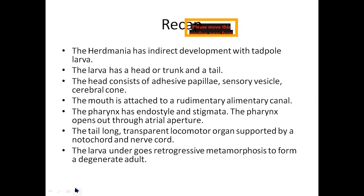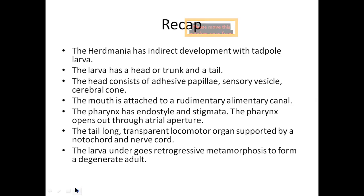As we all know, the structure of the Tadpole-Larva has a head region and a tail. The head region has adhesive papillae, cerebral vesicle, and the alimentary canal in the larval form, which is very rudimentary. The pharynx has endostyle and stigmata. The pharynx opens out to the atrial aperture. The tail is very long and has notochord and nerve cord. All these structures are present in the active larval form, and this active larval form undergoes retrogressive metamorphosis.